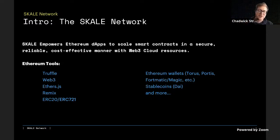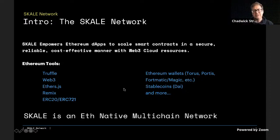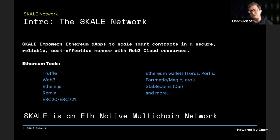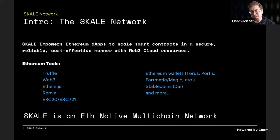I want to go deeper into some unique properties of SCALE Network. SCALE is an ETH native multi-chain network, and I want to break this down. What is ETH native? What is multi-chain? These might be new terms. This is something the core team and community has been iterating and developing over the many years we've been developing the SCALE Network.